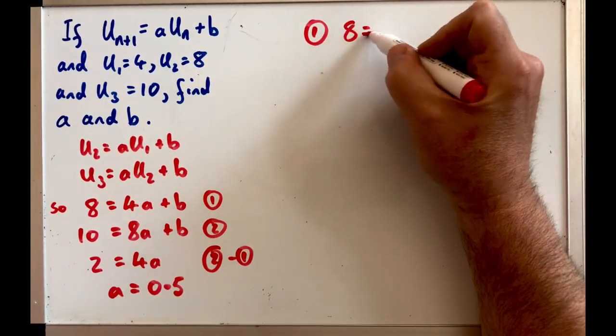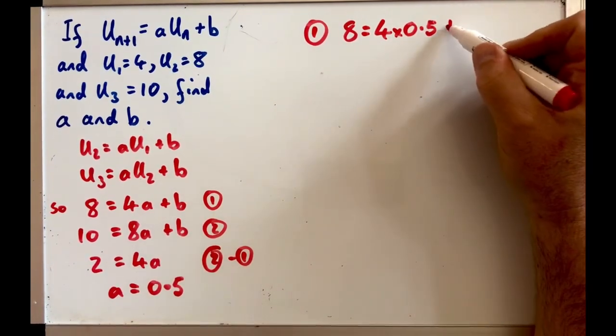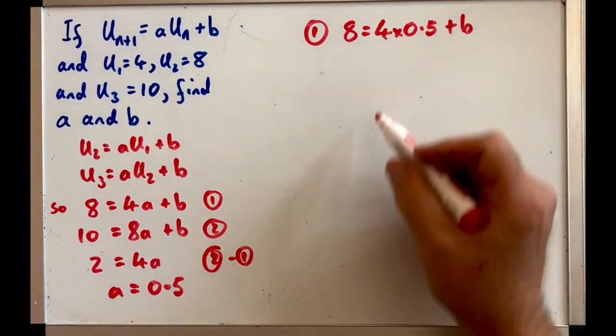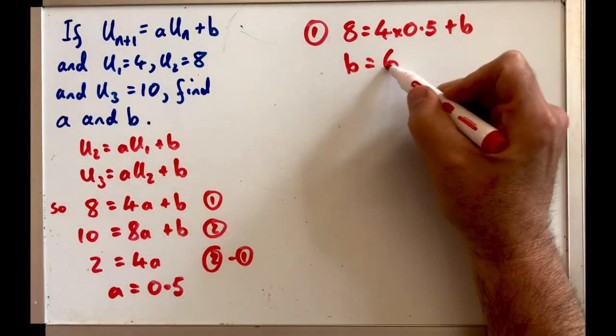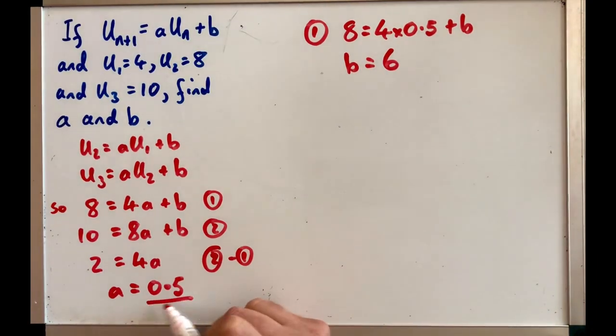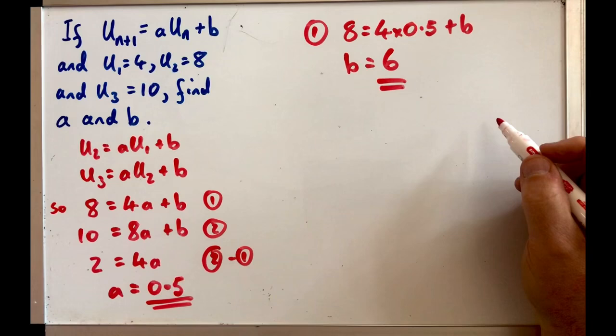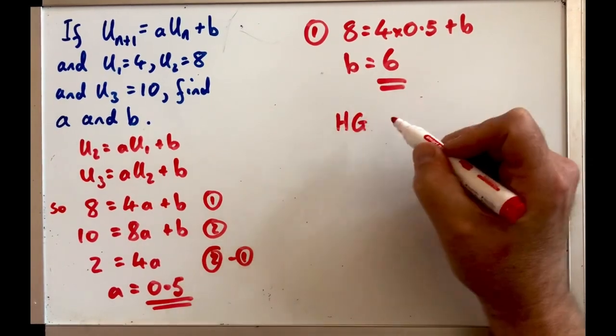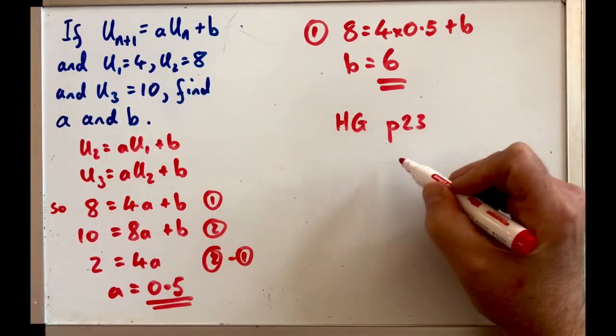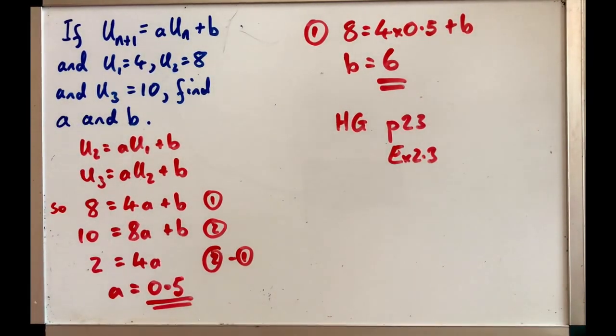Then we can take either equation, I'll just use the first one again. Let's plug in what a is so you've got 8 equals 4 times a half plus b, so b will be, 4 times a half is 2, take it away from 8 you've got 6. So we've got a is 0.5, b is 6, that's all we are asked for in this question. Now if you want to practice these and the ones set before in context, it's Hodder Gibson page 23 exercise 2.3.